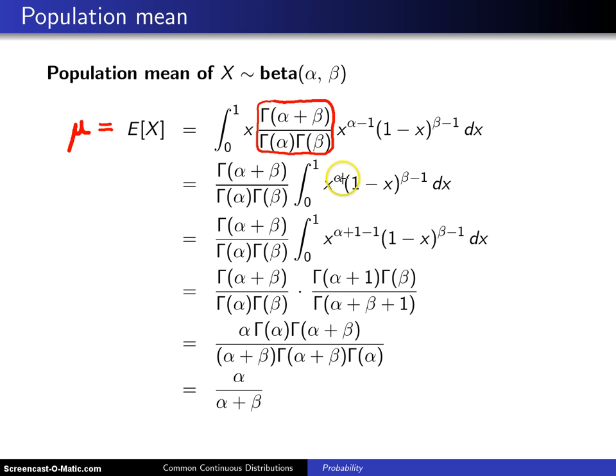and we've replaced x to the alpha power with x to the alpha plus 1 minus 1 power. The reason that has been done is this expression right here is a beta function